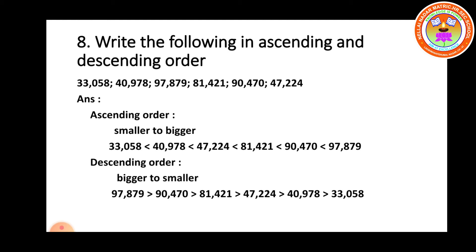See the given numbers. Look at the first digit from the left: first one 3, second one 4, third one 9, next 8, next 9, next 4. When comparing those numbers, 4 occurs 2 times, 9 occurs 2 times. Among the first digits, select the smaller one for ascending order. The smallest is 3, so the first number is 33,058.